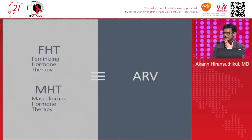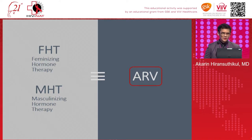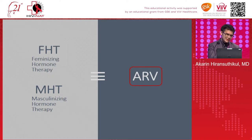GA-HT is categorized into feminizing hormone therapy and masculinizing hormone therapy. Reminding us again that ARV can be categorized into two groups: the PrEP arm and ART as the whole treatment package. This is very important because the drug interaction and pharmacokinetics play a very unique role depending on whether you use NRTI, NNRTI, or PI.